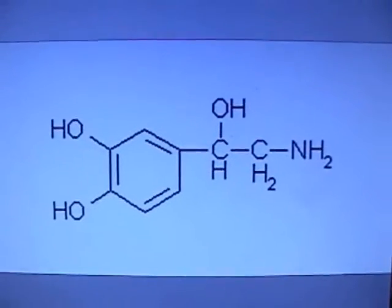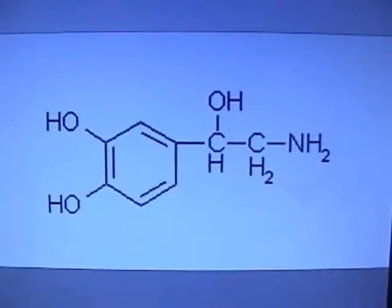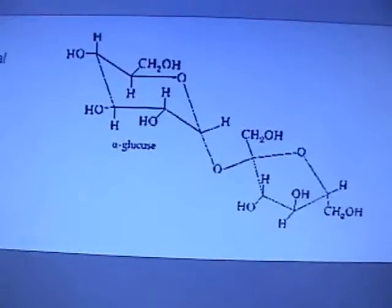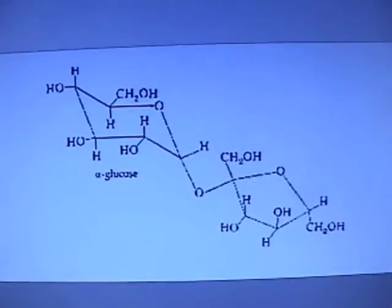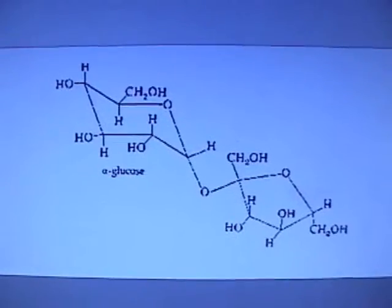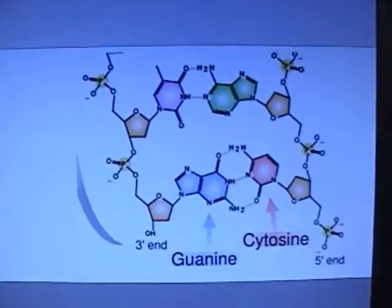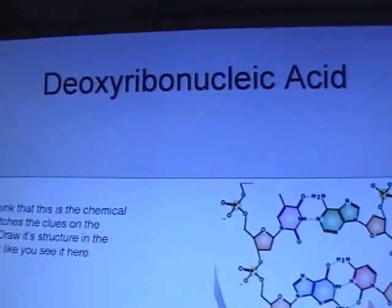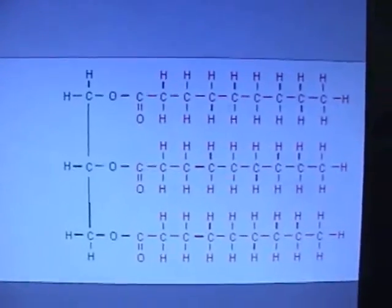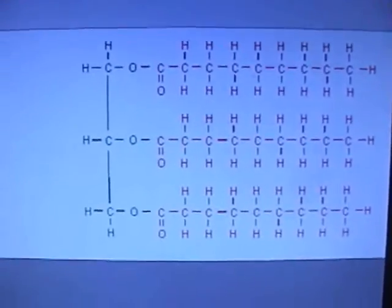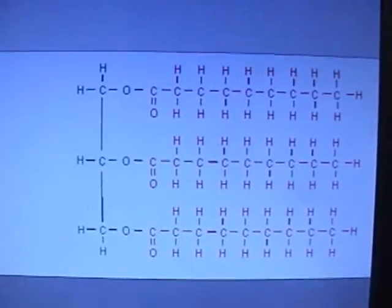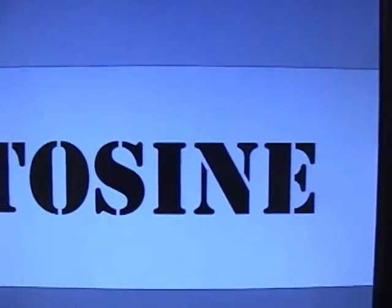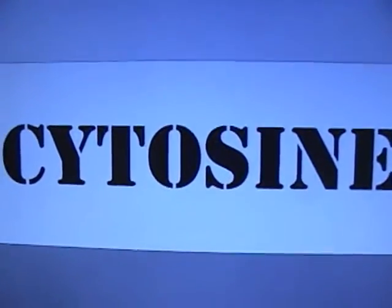This guy right here — that's methionine, an amino acid. This puppy right there — that's what happens when a girl is kissing you on the cheek and you get all excited. That's called epinephrine, and it's the fight-or-flight molecule. This guy right here — that's a sugar, and it's a disaccharide. That puppy right there is DNA, also known as deoxyribonucleic acid. This guy is a fat — a saturated fat molecule. And that says cytosine, which is cool.